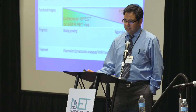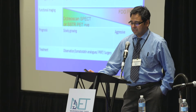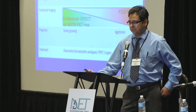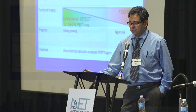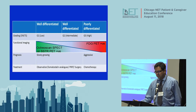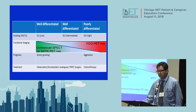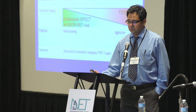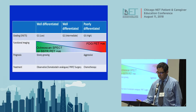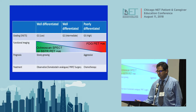When is Gallium-68 DOTATATE scan indicated? We have well-differentiated tumors — G1 or G2 — and poorly-differentiated G3 tumors. For G1 and G2, Gallium-68 DOTATATE PET or OctoScan works very well. But for poorly-differentiated tumors, only FDG PET is positive — Gallium-68 DOTATATE will be negative in poorly-differentiated tumors.